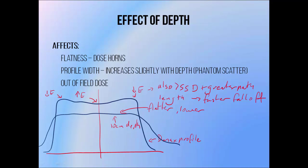The beam is also wider at greater depth because the beam is diverging. If we measure a profile at an even greater depth, we see that the dose in the centre of the beam is actually higher. This is because the low energy portions of the beam have been attenuated at a greater rate, and the high energy portion at the centre has been attenuated at a lower rate, so there are now more photons left in the centre of the beam.